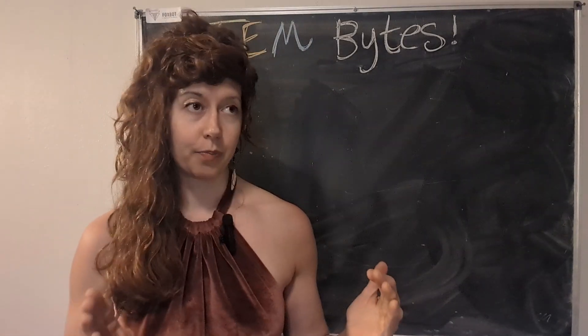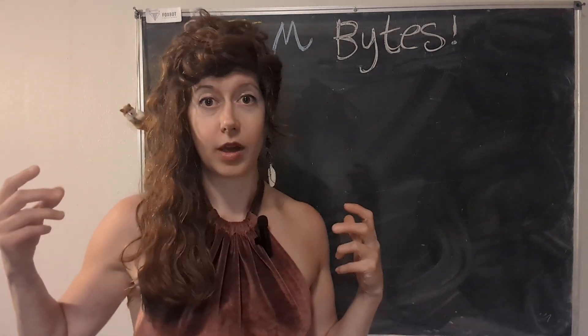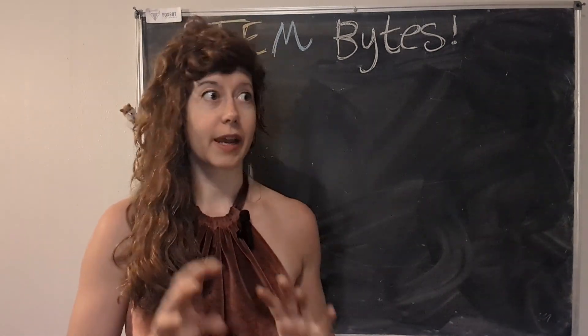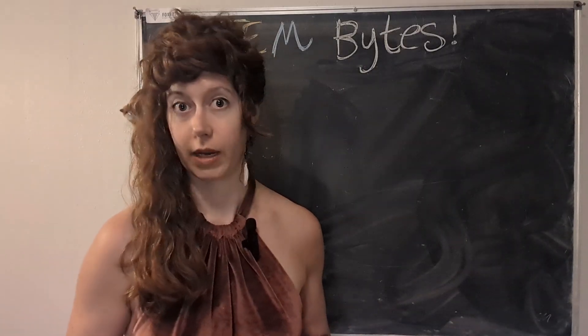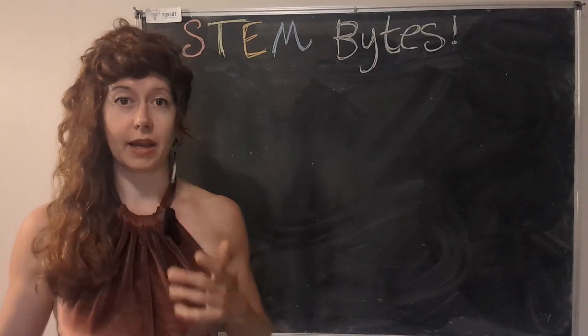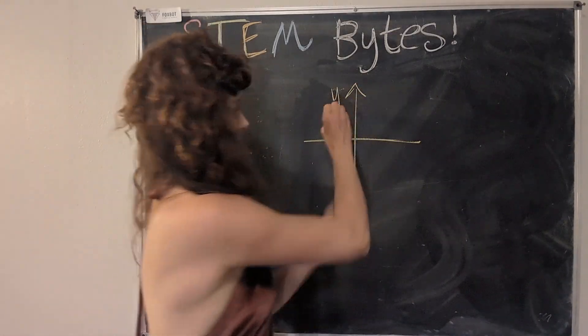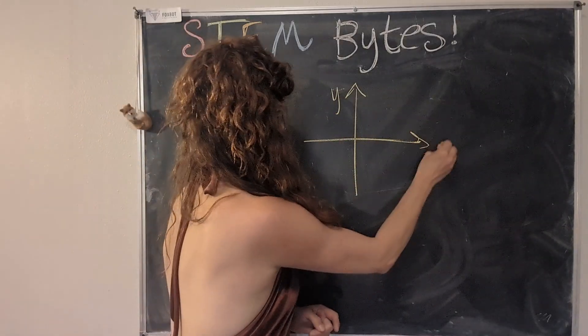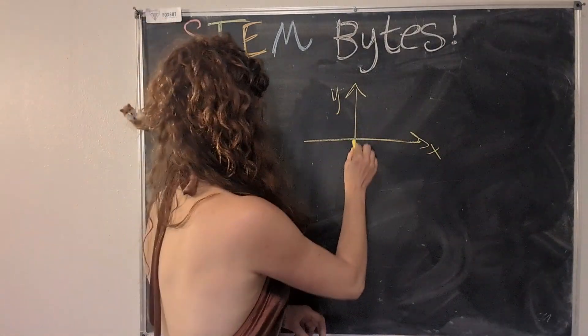But first, I want to back up. The goal of physics is to come up with universal truths that can be applied no matter where you happen to be measuring things. So in physics, we call that a coordinate system. And you might have seen this in math where you set up an axis and you're like, this is the y-axis and this is the x-axis.